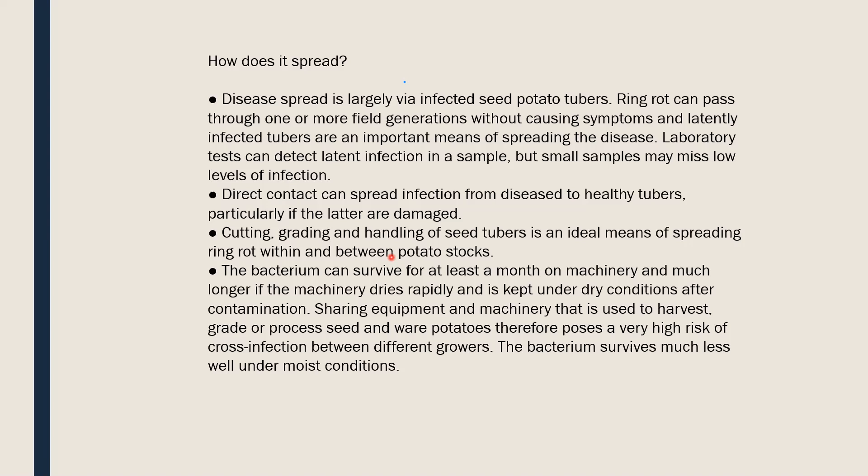Bacteria can survive for at least a month on machinery, and much longer if the machinery dries rapidly and is kept under dry conditions after contamination. Under dry conditions it can survive longer because the slime surrounding the bacteria dries up quickly, preserving the bacterial cells within that dried slime. Sharing equipment and machinery used to harvest, grade, or process seed potatoes poses a very high risk of cross-infection. The bacteria survives much less well under moist conditions.